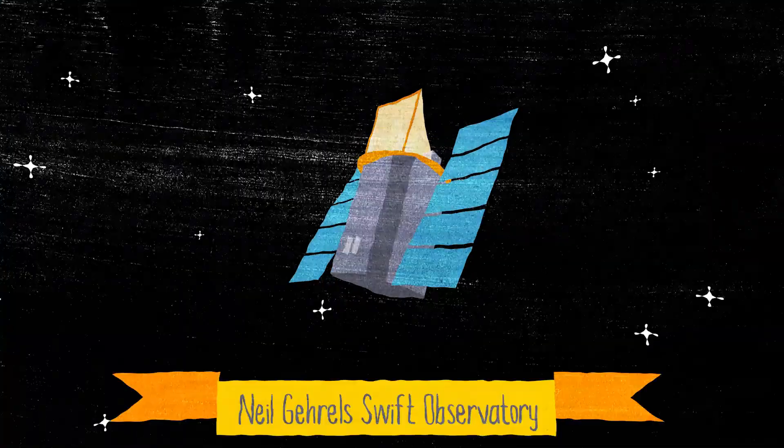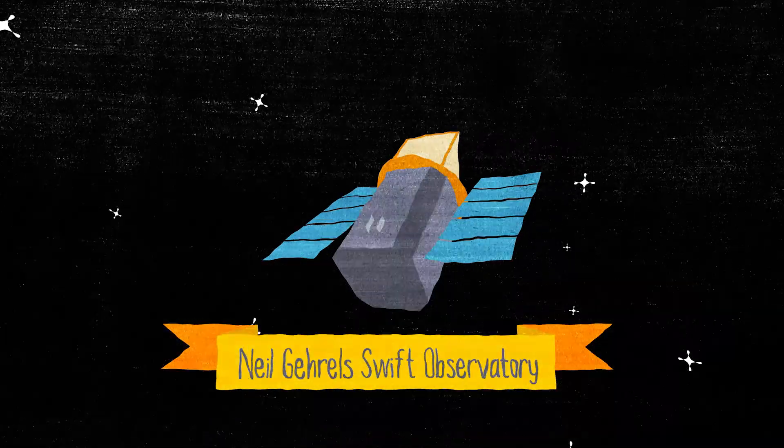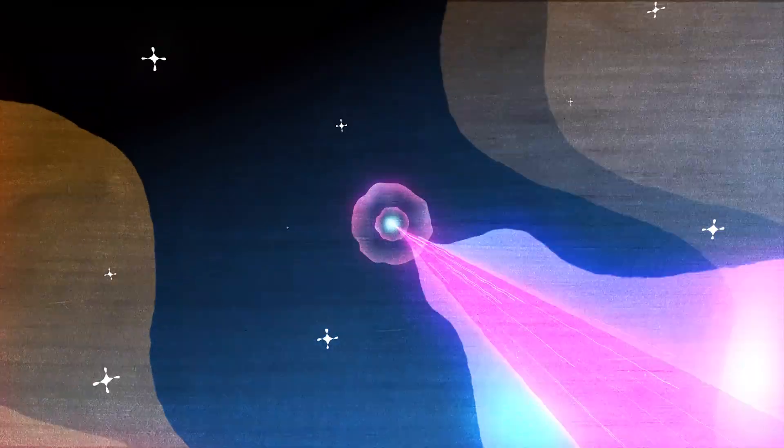Swift is an observatory launched about 15 years ago, designed to study gamma-ray bursts, which are the most powerful explosions in the universe.